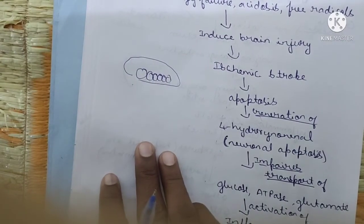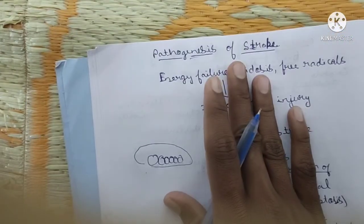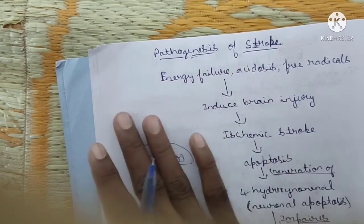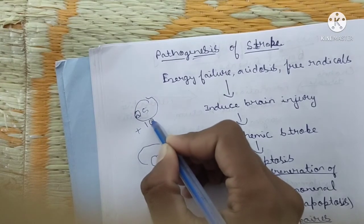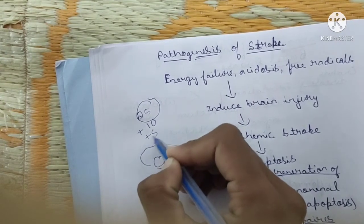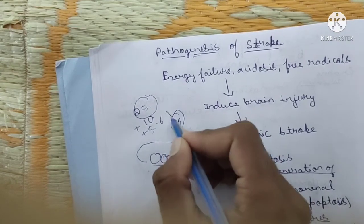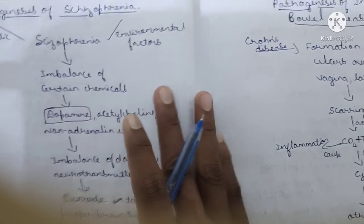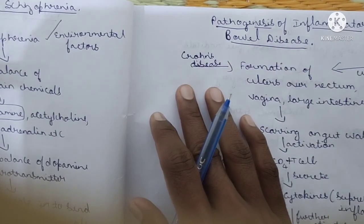These are the ten very important pathogeneses. Four more, including hypertension, will be uploaded in the description. If you clear all pathogeneses you can score 25 marks, plus 10 from two-mark questions, plus five to six from five-mark questions — totaling around 46 marks — and you will pass pathophysiology with flying colors. Share this video with friends, thank you, assalamu alaikum.